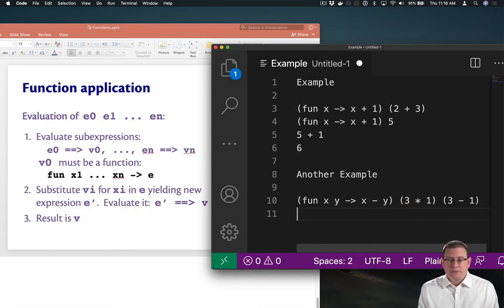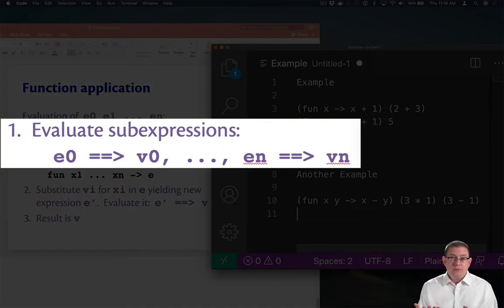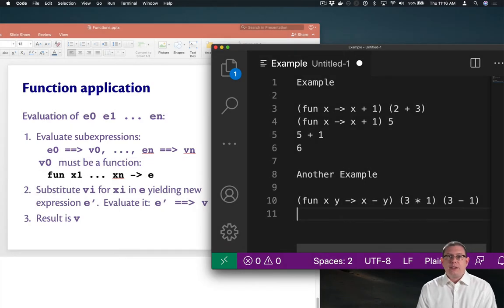Let's try a second example. Suppose we apply the anonymous function that subtracts its second argument from its first to two other expressions. What does the function application rule say? First, evaluate all the sub-expressions. Done with the first one because it's already a value. That anonymous function is already a value.